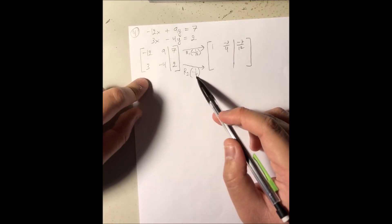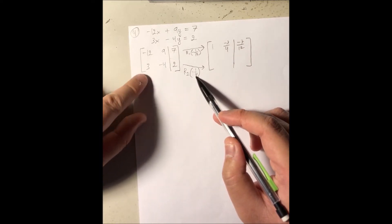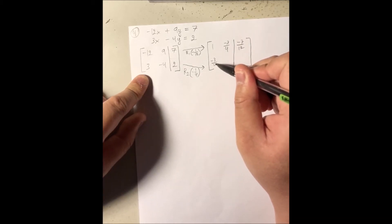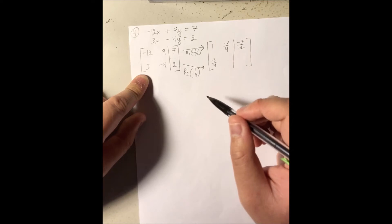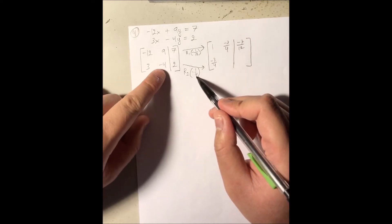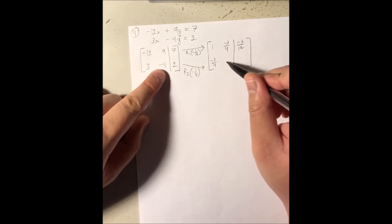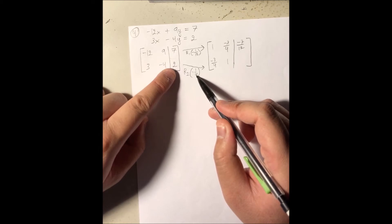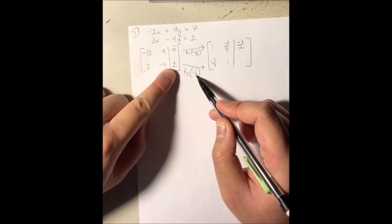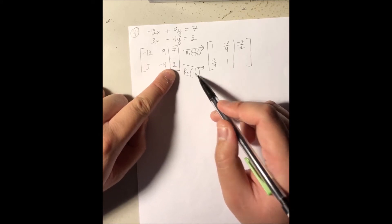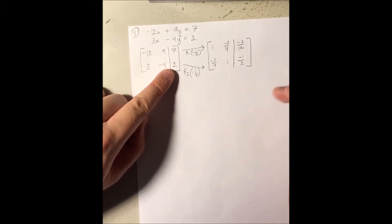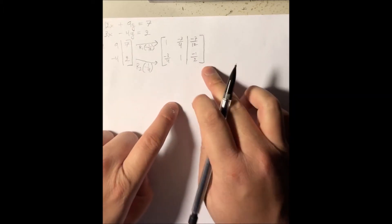For the second row: negative 1 over 4 times 3 is negative 3 over 4. Negative 1 over 4 times negative 4 is positive 1. And negative 1 over 4 times 2 is negative 2 over 4, which reduces to negative 1 over 2. So this is my new matrix.